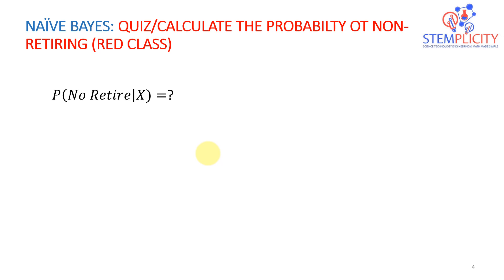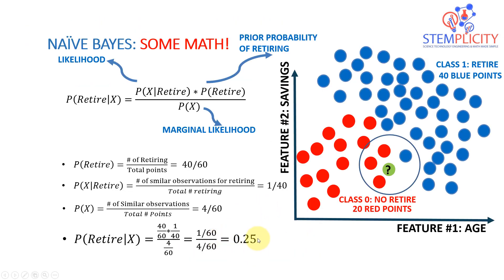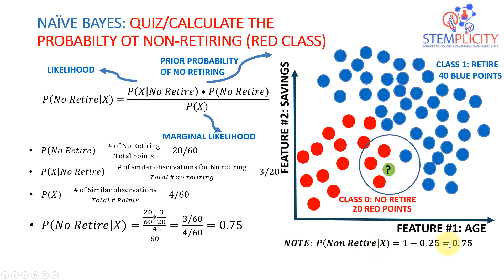I hope you were able to figure out the challenge. One very simple and straightforward solution: since we know the probability of retiring is 0.25, and there are only two classes, the probability of not retiring is simply 1 minus 0.25, which equals 0.75.